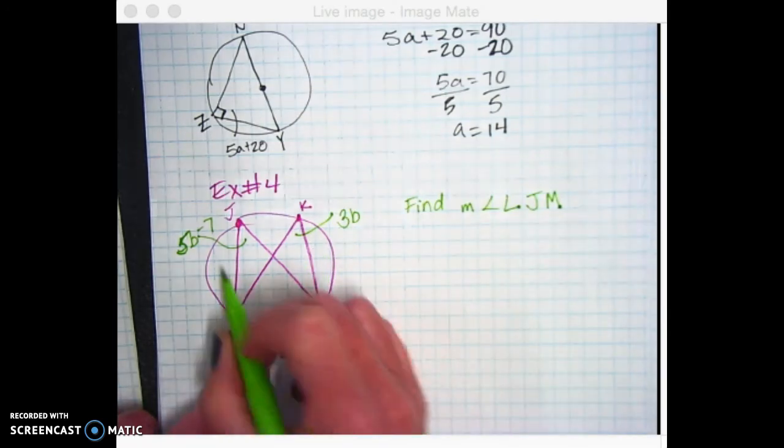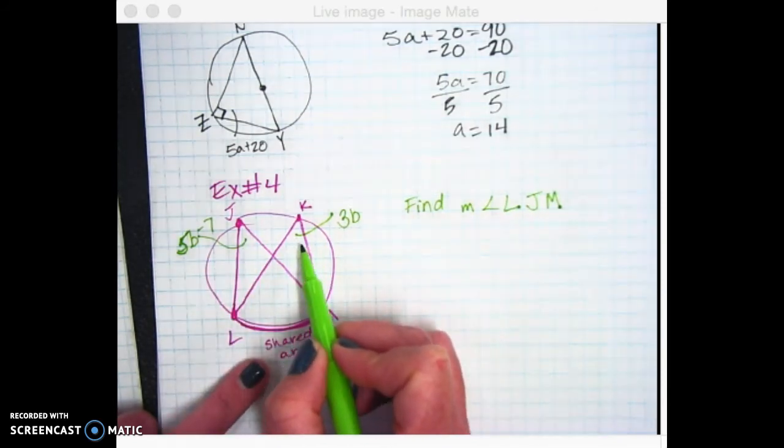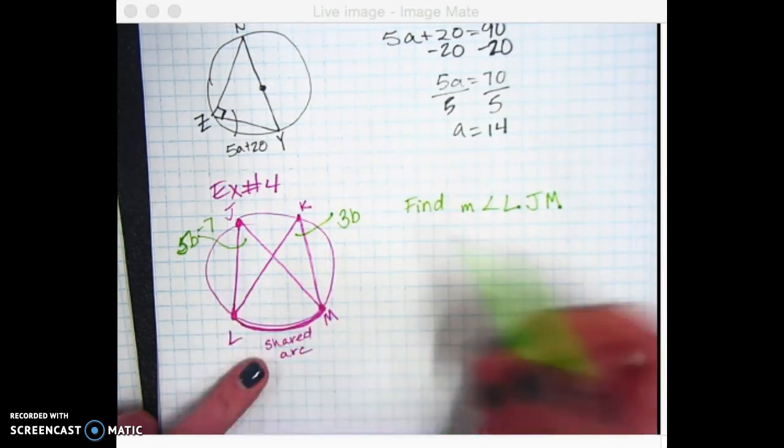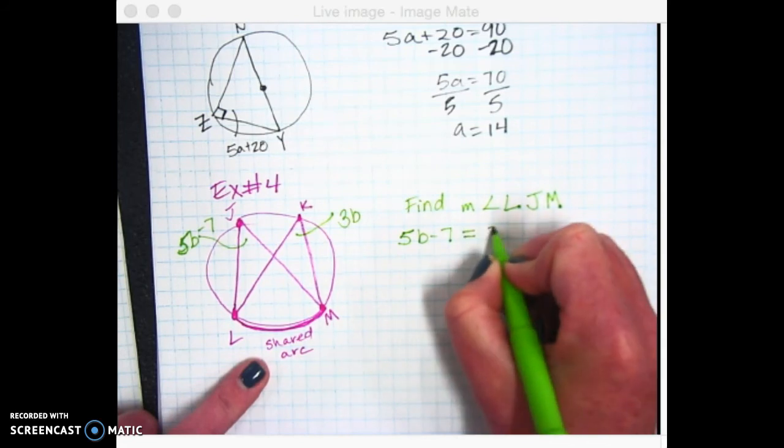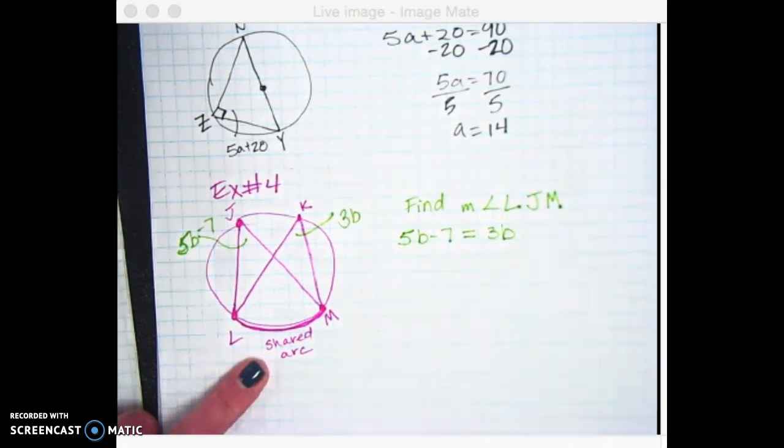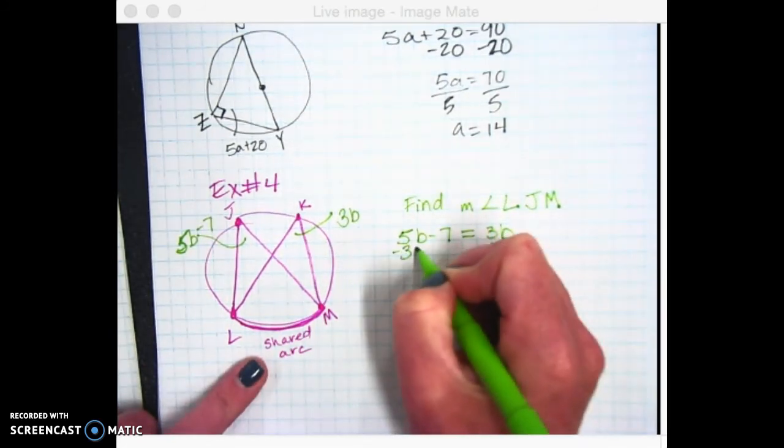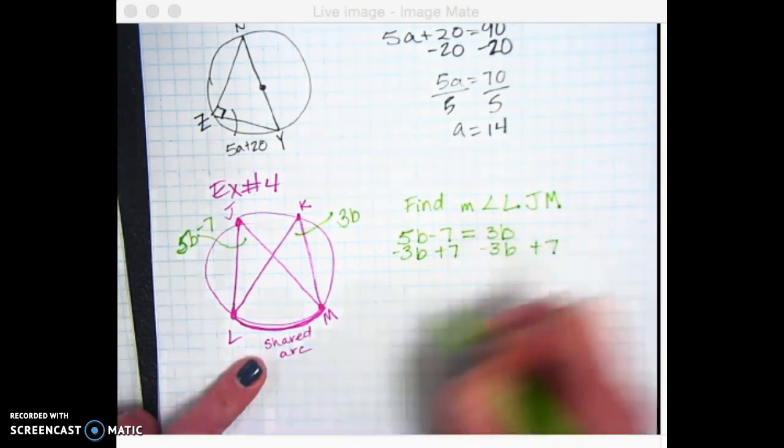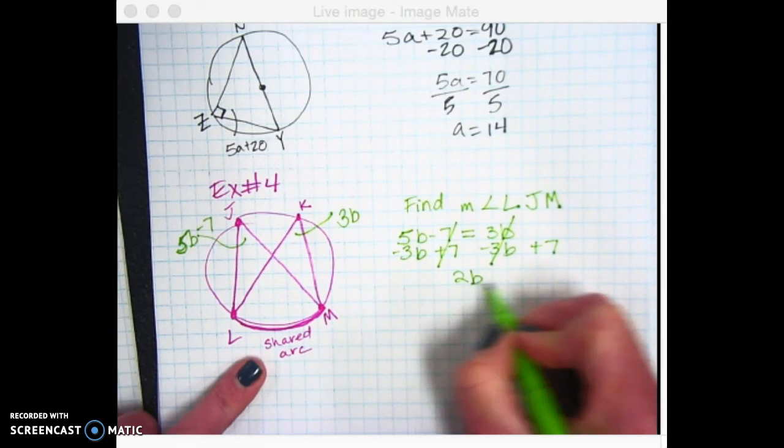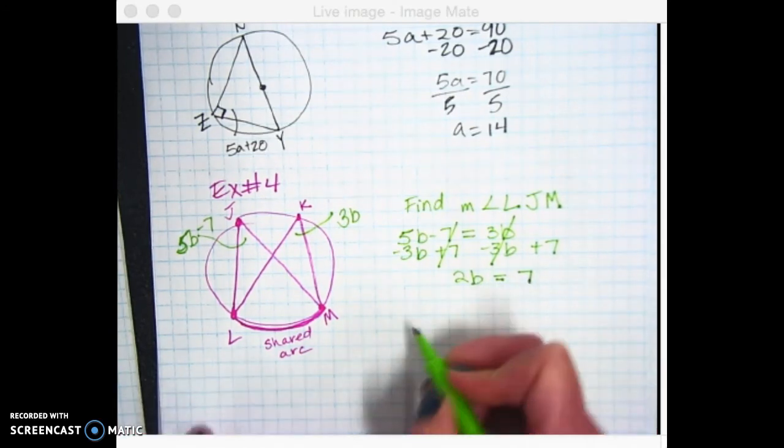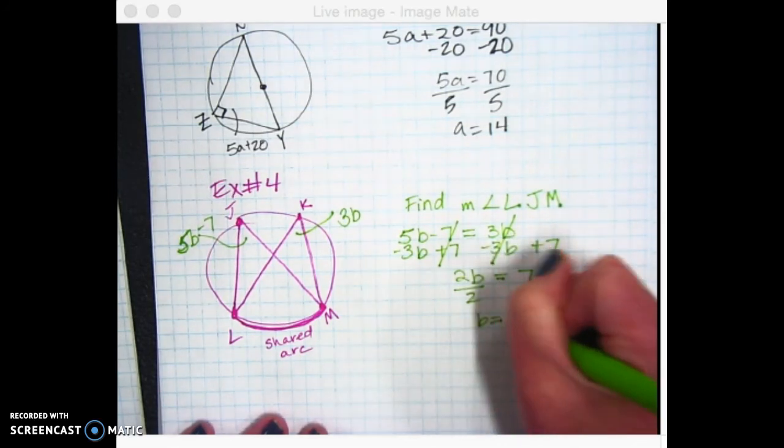So here's the thing. If these two inscribed angles share this same arc, then they should be congruent or equal. And if it was just, if this one was 35, we'd say this one is 35 degrees as well. But instead of just having a number, we have algebra. So we set them equal to each other. Our two algebraic expressions creating that algebraic equation. I'm going to subtract 3B from both sides. I'm going to add 7 to both sides. These cancel. These cancel. And I have 2B equals 7. And then I just divide by 2. And I get B equals 3.5.